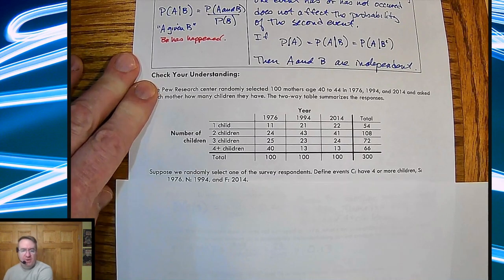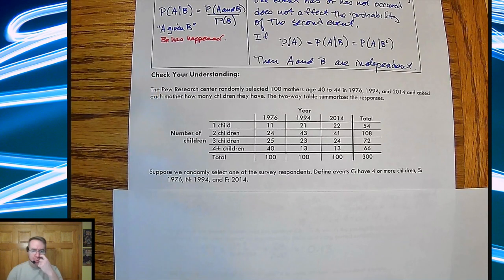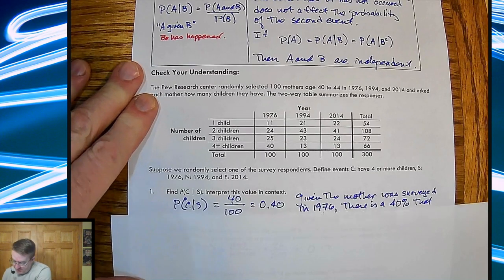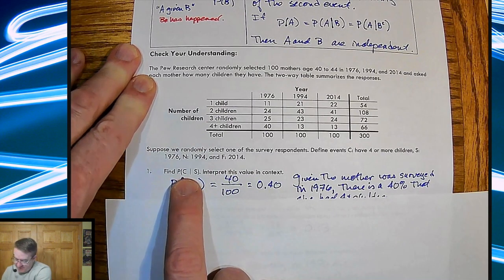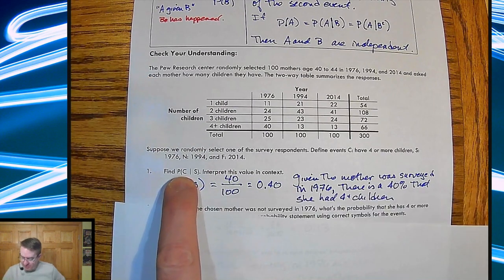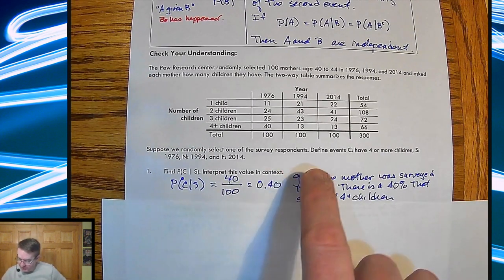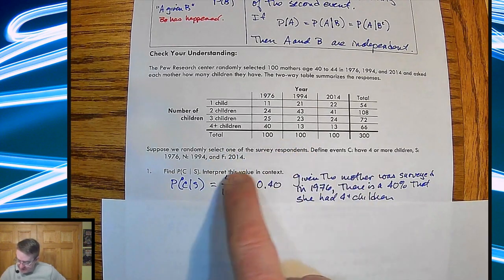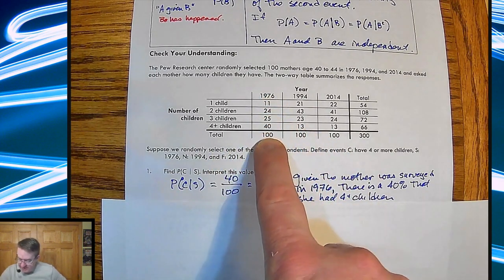All right. So here's what we ended up getting. So suppose we randomly select one of the survey recipients. We have defined event C as having four or more children. S is being surveyed in 1976. N is being surveyed in 1994. F is being surveyed in 2014. So find P of C given S. This is saying, what's the probability of having four children, because that's what C is, given the fact that they were surveyed in 1976?